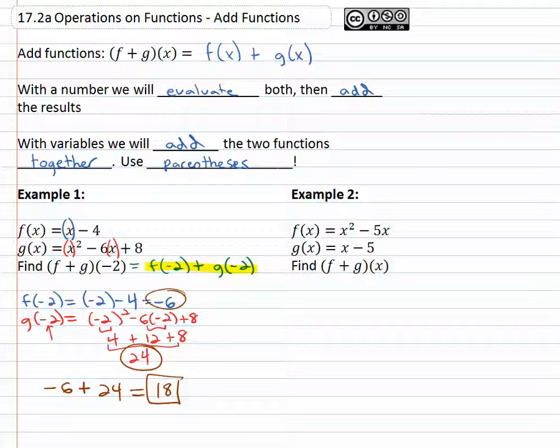How about example two? We're asked to find (f+g)(x) when f(x) = x² - 5x and g(x) = x - 5. Well what that's really asking us to do is find f(x) and add to it g(x), and that really means we're just going to use the functions.